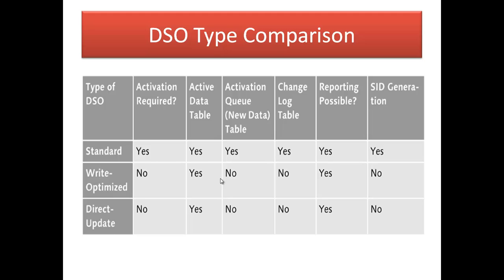Comparing the three DSO types: activation is required only for the Standard DSO. All three DSOs contain an active data table. Only the Standard DSO contains the activation queue table and the change log table. Reporting is possible for all three DSO types, but SID generation can be done only in the Standard DSO.